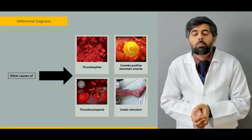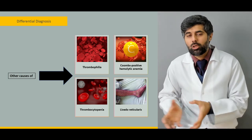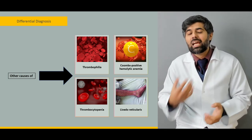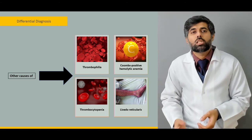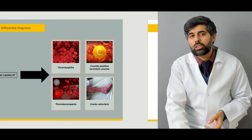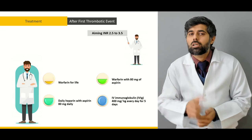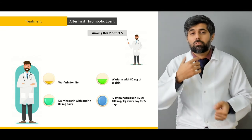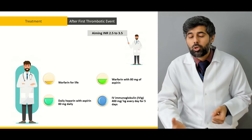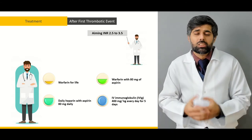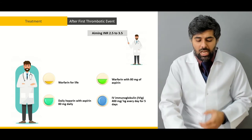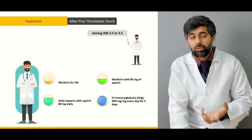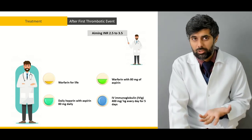Then we learn about its differential diagnosis — what other conditions can mimic the symptomology of antiphospholipid syndrome. Then we learn about its treatment: what treatment is given after the first thrombotic event, which treatment is given during pregnancy, and which treatment is given if thrombotic events become frequent and recurrent.